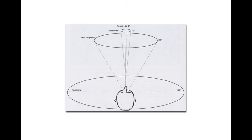The foveal region tends to be the highest quality, most crisp, high-definition region of your vision — corresponding to the densest concentration of cones on the retina. The more dense your sensory apparatus, the better your measurements and the clearer the picture.